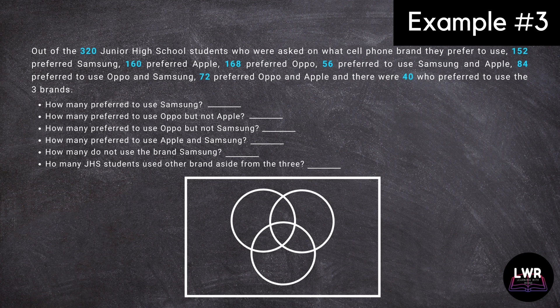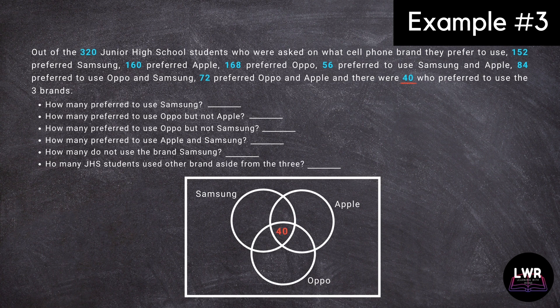We will draw the diagram. For this type of problem, we will have three overlapping circles. We will name the circle at the upper left side to represent the data for Samsung, the circle at the upper right side for Apple, and the circle at the bottom area for Oppo. It is stated in the problem that 40 junior high school students prefer to use all three brands for mobile phones, so we will place this number at the center where the three circles overlap.